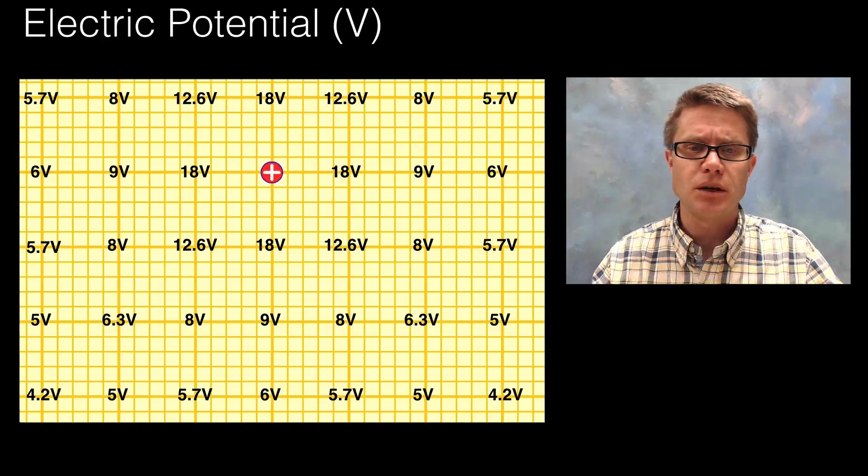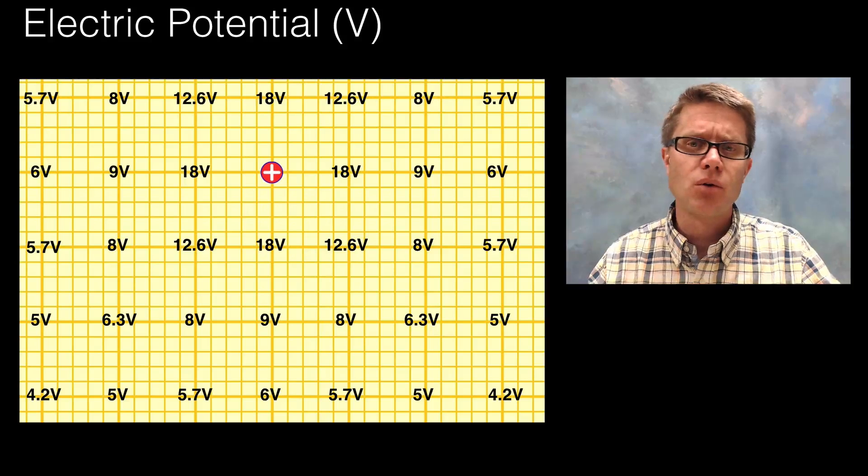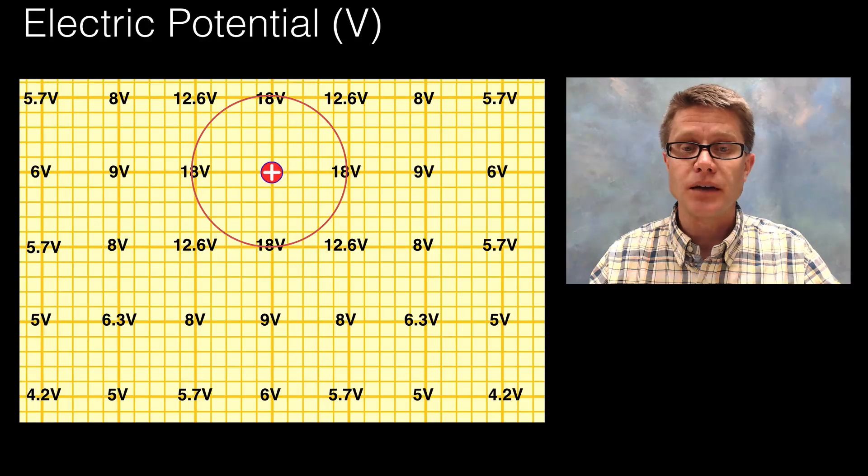And so you might guess that there's going to be a positive charge right there. And the farther we move away we're going to have a lower positive charge. And so we could draw in iso lines.